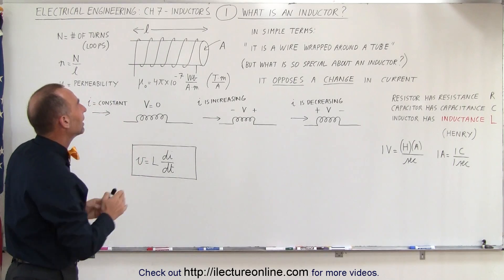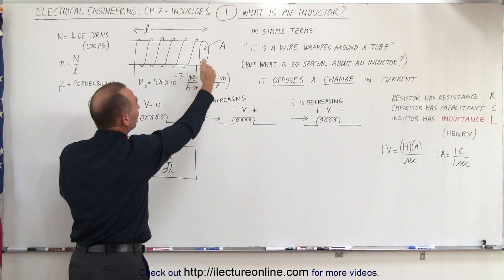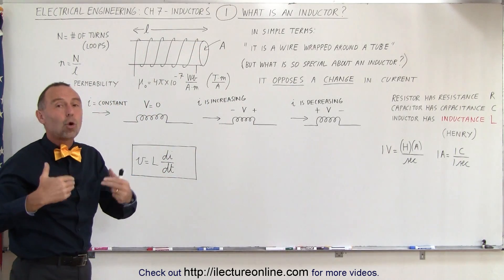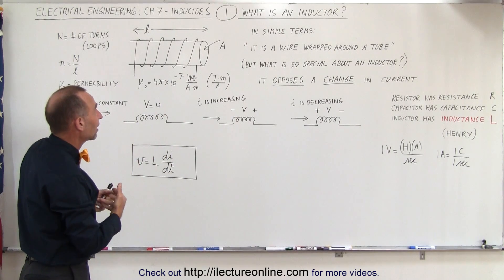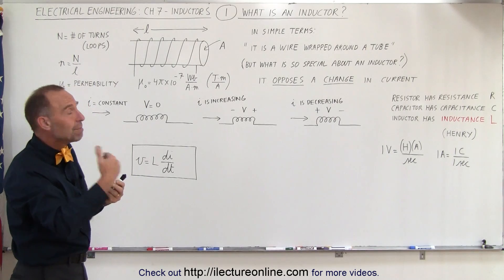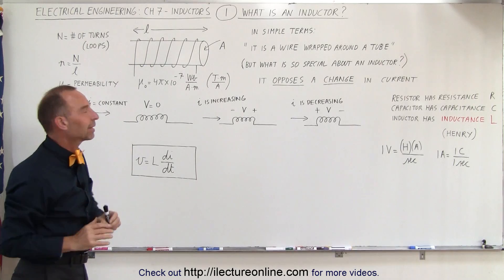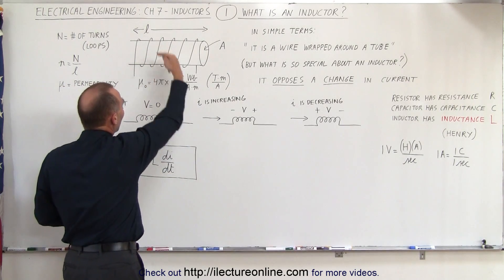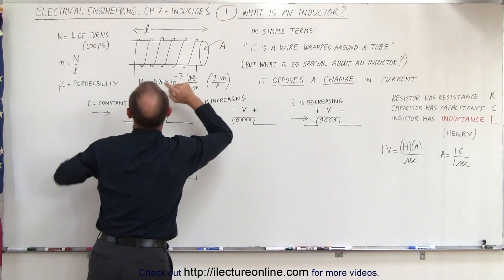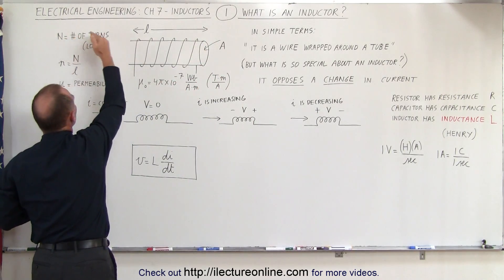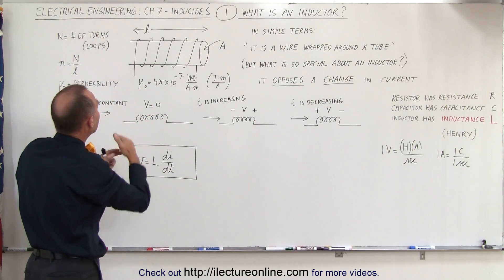Physically, an inductor — here's a drawing of an inductor — is simply a tube. That tube could be a hollow tube with air inside, then it's called an air core inductor, or it could have a metal core to enhance the magnetic field. But it's simply a wire wrapped around the tube. The tube has a cross-sectional area, it has a length, and also an inductor has a number of turns. Each loop of wire around the tube is called a turn.